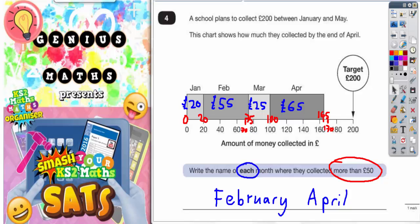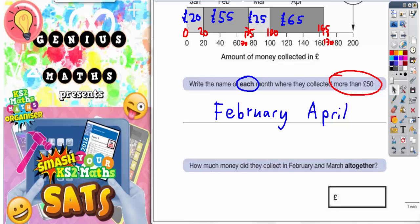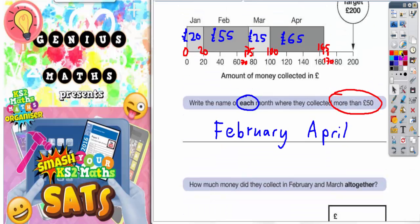If we scroll down then the second part of the question. How much money did they collect in February and March all together? Well we've already worked out here that February was £55 and March was £25. So all together we need to add them together.